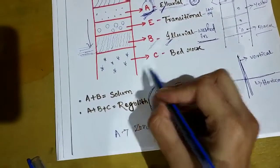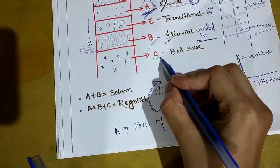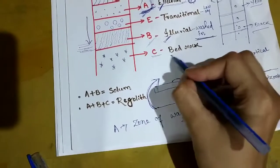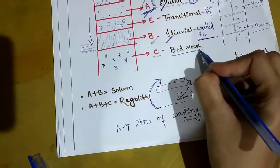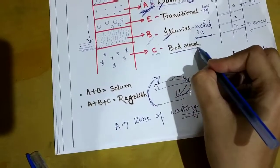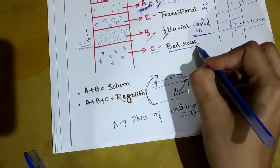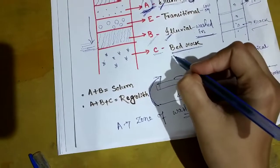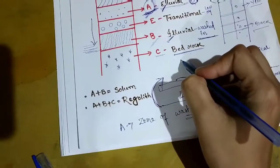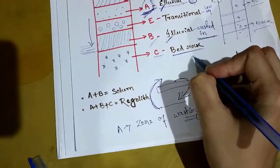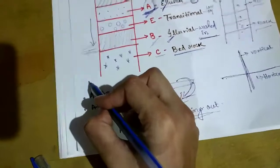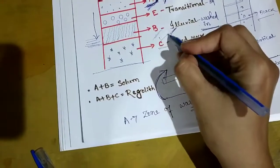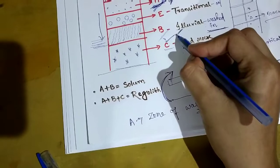The last horizon is the C horizon, which is the bedrock zone or bedrock horizon. Here we can see rocks as well as disintegrated rocks. This is the bottom layer — the last horizon in the soil profile.